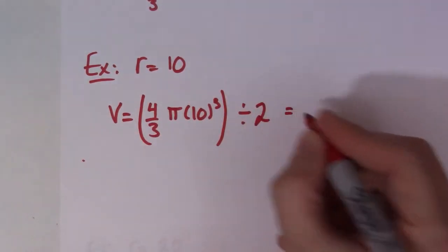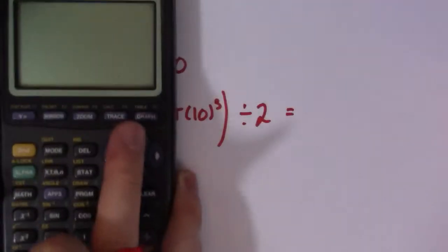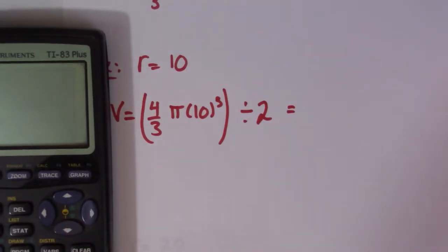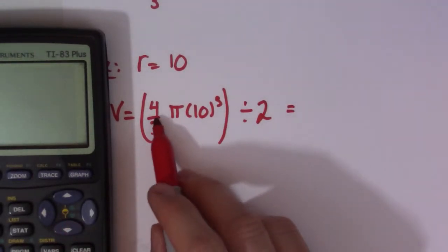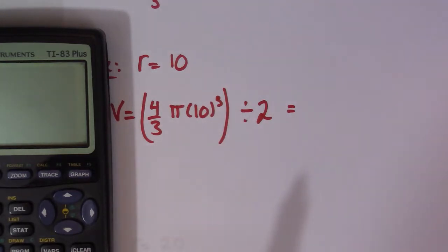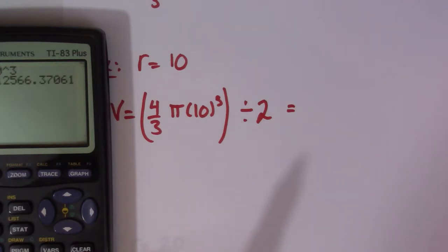And then just remember I have to divide it by two. So I'm going to go ahead and do that. Generally what I do for this is I do the top: four pi ten cubed divided by three. So four times pi times ten cubed, then I divide by three.